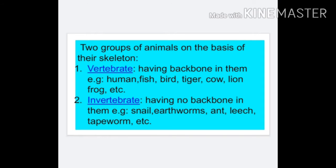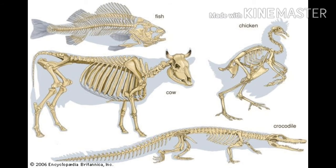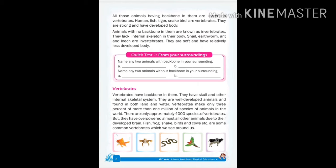Animals having a backbone in them are known as vertebrates — examples are humans, fish, birds, tigers, cows, and lions. Those animals which do not have a backbone are known as invertebrates — examples are earthworms, jellyfish, and others. If you don't know what backbone means, here are pictures of some animal skeletons. The backbone is the frame of the body.